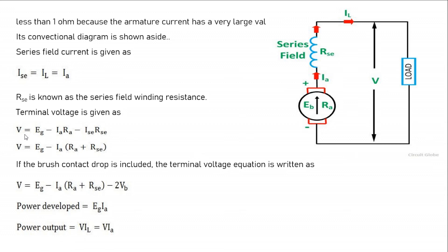For the series wound generator, the terminal voltage V = EG − IA·RA − ISC·RSC. Since IA and ISC are the same, this can be written as V = EG − IA(RA + RSC). If brush contact drop is also considered, V = EG − IA(RA + RSC) − 2VB. Power developed in armature = EG × IA, and power output = V × IA, where IA = ISC = IL.